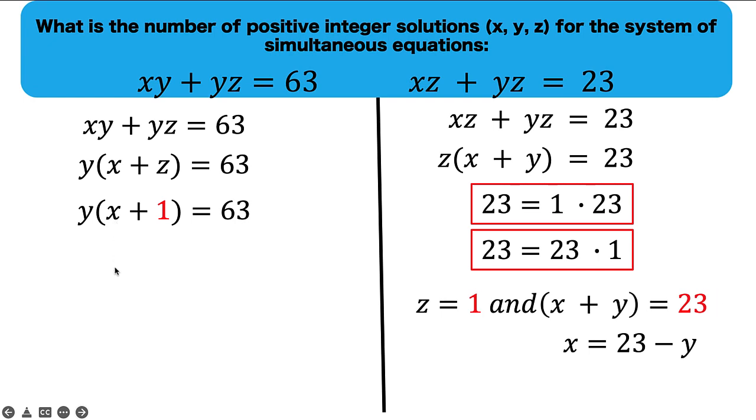Replacing now this x by 23 minus y, we have this form. And 23 plus 1 is 24. Then distribute y to this binomial. We have here a quadratic equation.